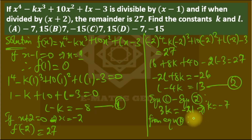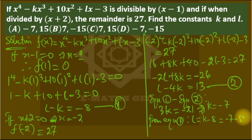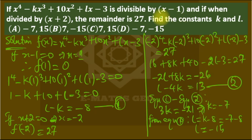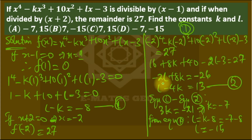Substituting k = -7 back into Equation 1: l = k minus 8 = -7 minus 8 = -15. So l = -15. The answer is k = -7 and l = -15, which corresponds to option D. Thank you.